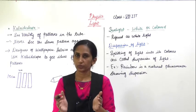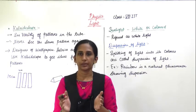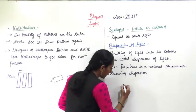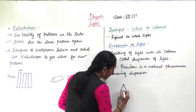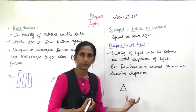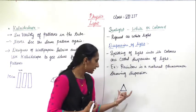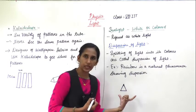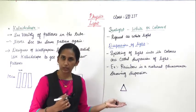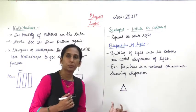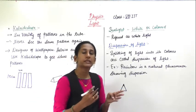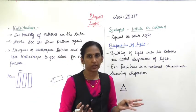So what is a prism? A prism is a glass triangular-shaped object. It is made up of glass and its shape is triangular. It is used for the splitting of light.